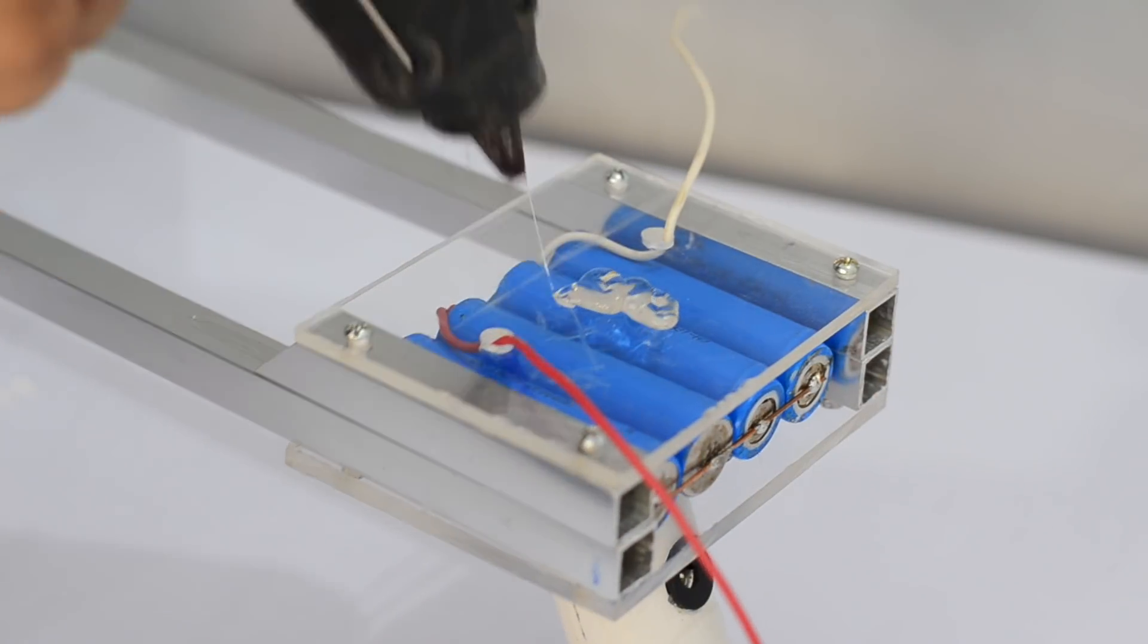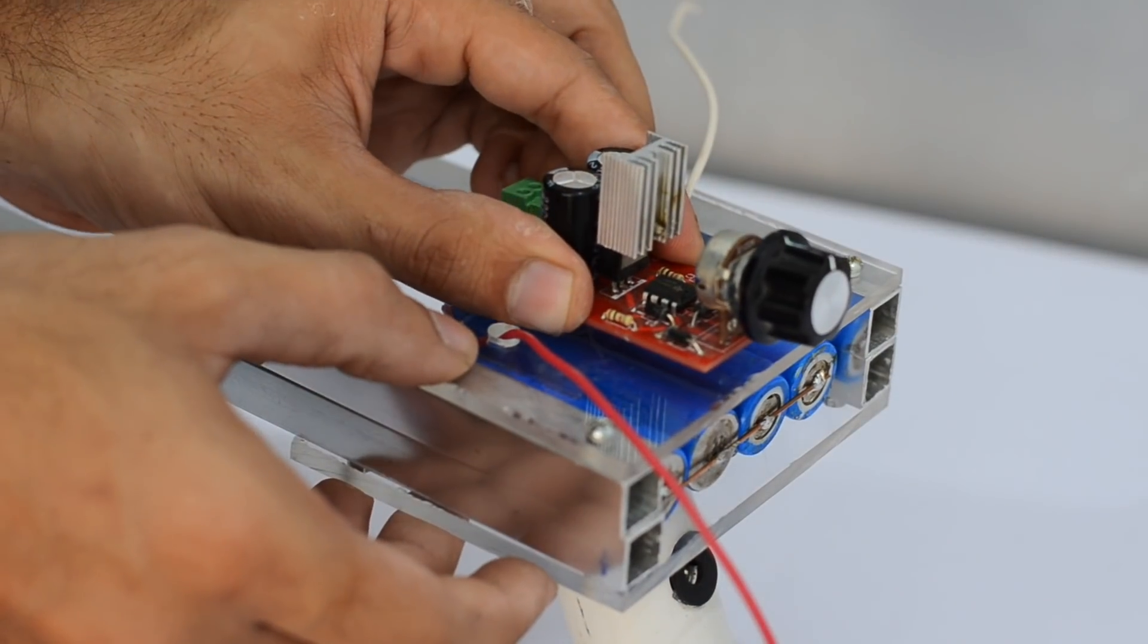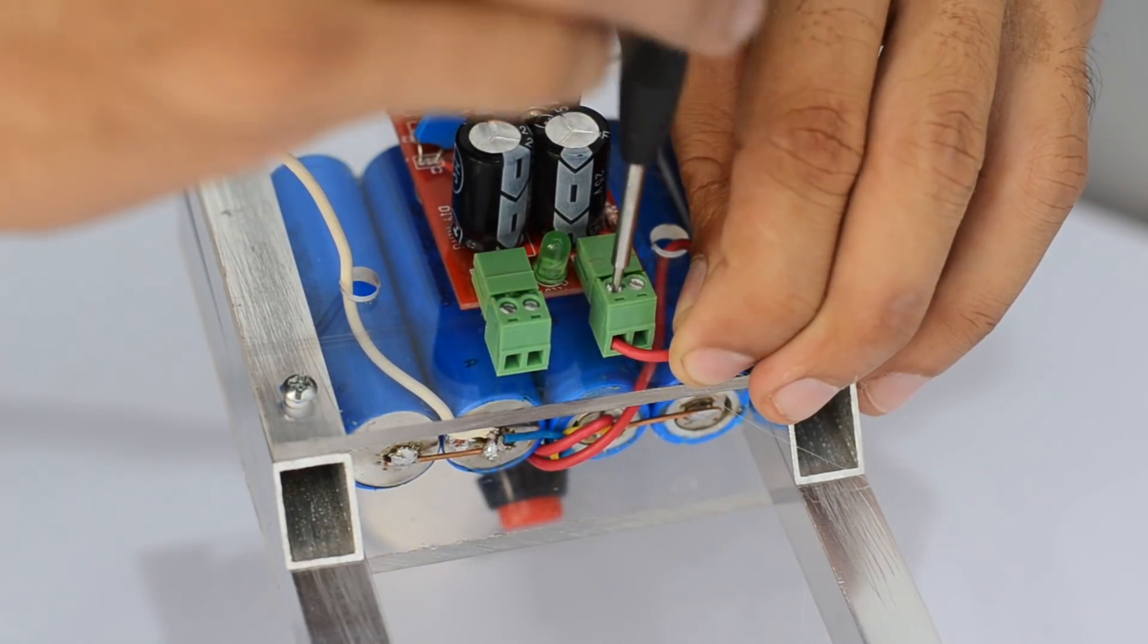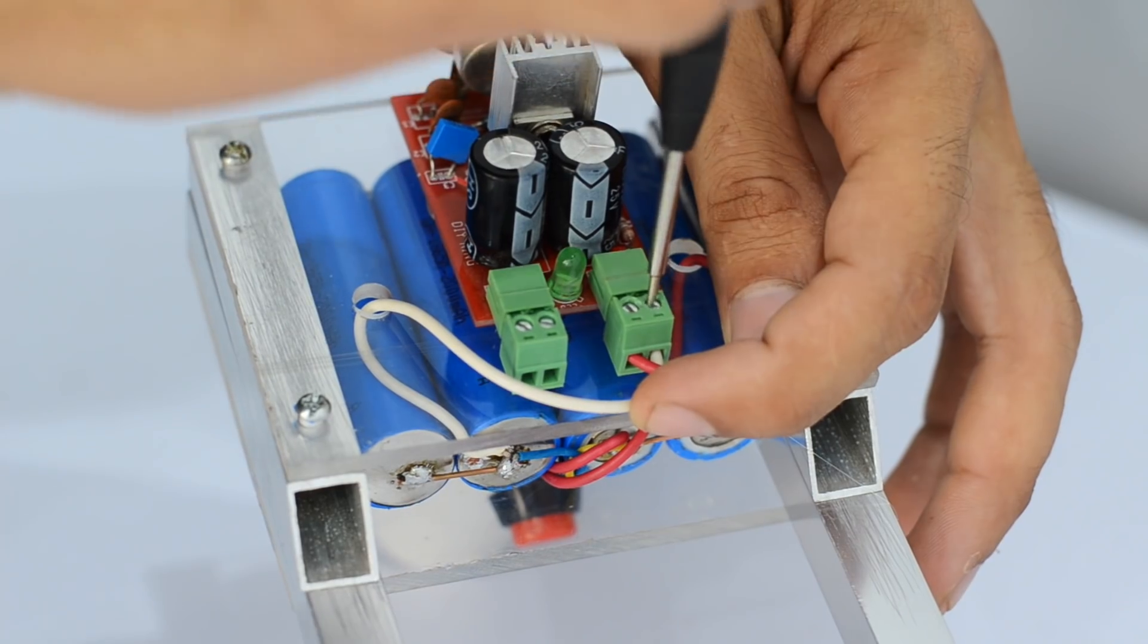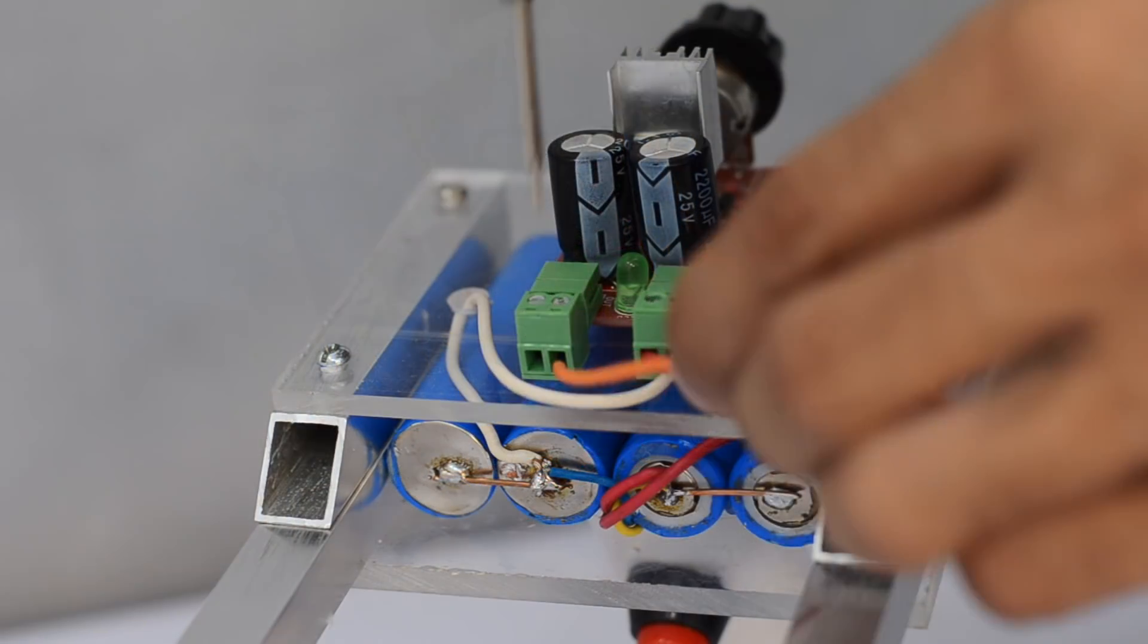The controller is then glued at the top of the foam cutter. The input side is connected to the battery pack, while the output side is connected to each arm of the foam cutter.